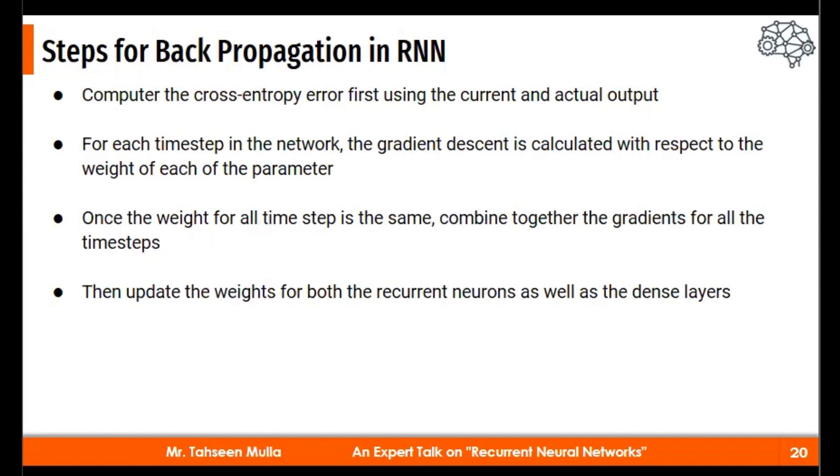Suppose if I want to go for three steps, there will be three different iterations of unfolding. Then for each time step in the network, the gradient descent will be calculated with respect to the weight of each parameter. Now, the moment I decide my parameters and fix those parameters that will be treated as weight for the next iteration. So once these weights are decided for all time step, we can combine together for all gradients time steps. Then we update it for the recurrent neurons and then go for the more dense layers. Each time for each back propagation, each step, all these steps are being computed. So there are two problems which can be overcome by LSTM: vanishing gradient problem and exploding gradient problem.